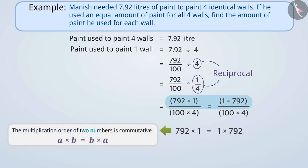Because the order of multiplication of two numbers is commutative, which means it can be done in any order.